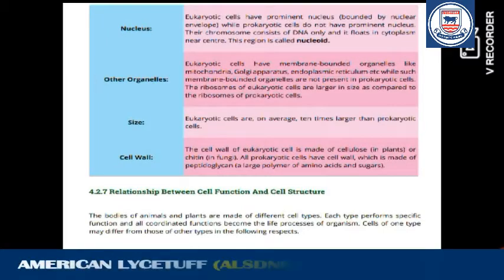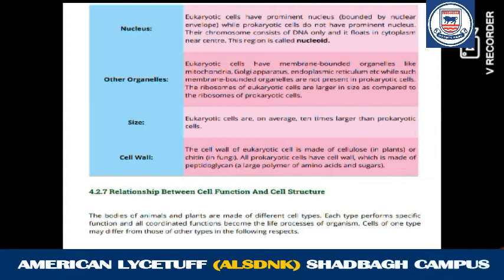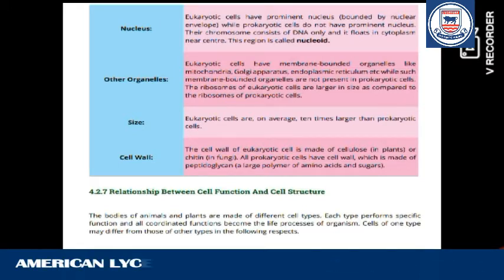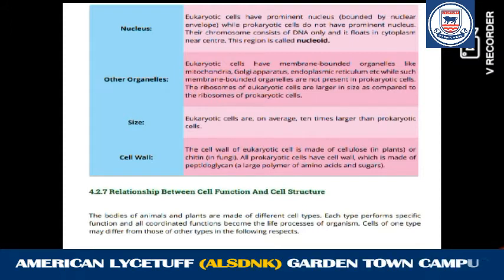Asalaamu alaykum class 9, let's go to our next topic, topic number 4.2.7. Last time we completed prokaryotic, eukaryotic and cell organelles. Today's next topic, from a short question and objective point of view, is cell function and cell structure — we have to connect how a cell's structure relates to its function. If a structure is like this, then this is what type of function it will perform.